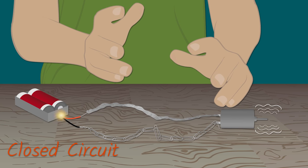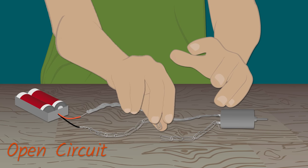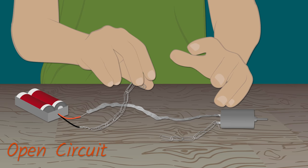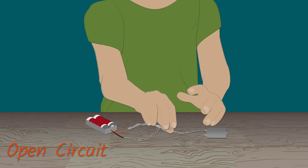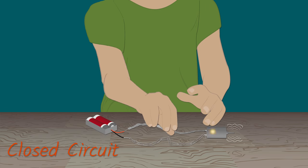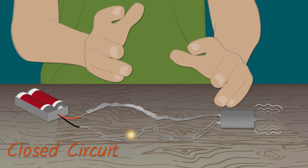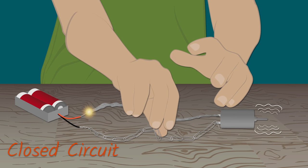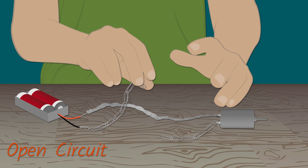After you have a working circuit, separate two of the conductors so that they are no longer touching. This should make your motor turn off. When you touch them back together, your motor should turn back on. Congratulations! You have just switched back and forth between an open and closed circuit.